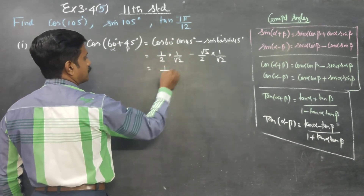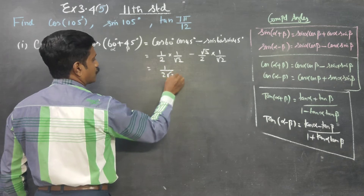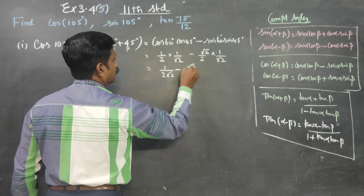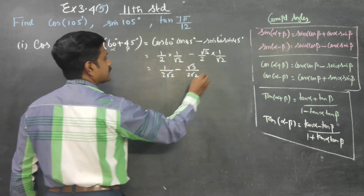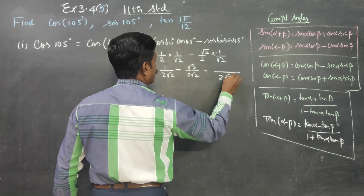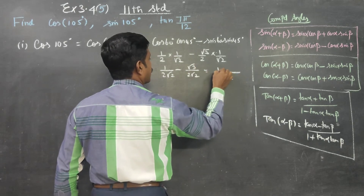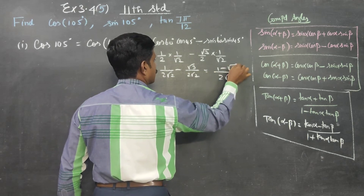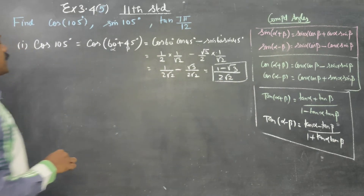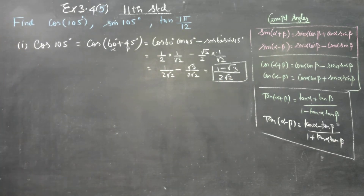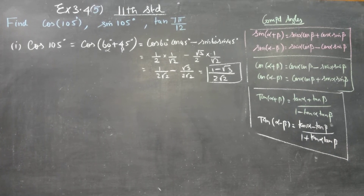Computing: (1/2)(1/√2) minus (√3/2)(1/√2). That gives 1/(2√2) minus √3/(2√2). Taking LCM, the answer is (1 − √3)/(2√2). This is my cos 105°.